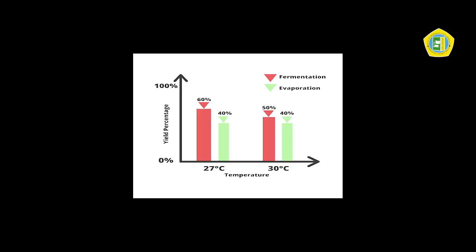This study shows that the percent yield of fermentation at 27 degrees Celsius and 30 degrees Celsius is 16% and 50%, and the yield for evaporation at 27 degrees Celsius is 40%. The fermentation yield is obtained from the fermented solution that has been filtered divided by the volume of the fruit mixture before filtering. The evaporation yield is obtained from the volume of ethanol from the evaporated product divided by the fermented solution.